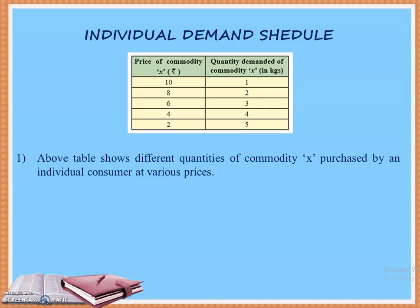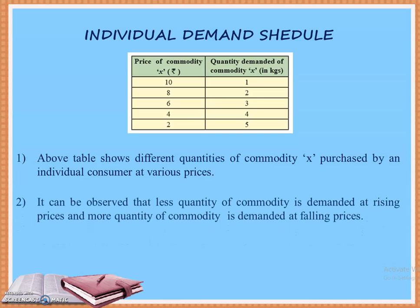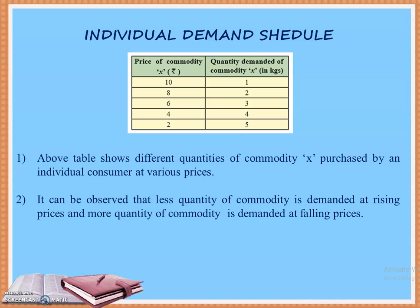Looking at this schedule, we can see different quantities of commodity X purchased by an individual consumer at various prices. It can be observed that less quantity of commodity is demanded at a rising price, and more quantity is demanded at a falling price.